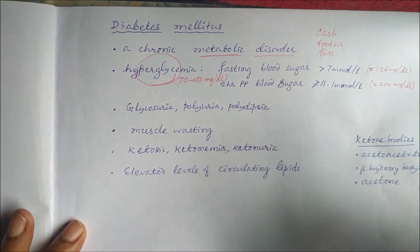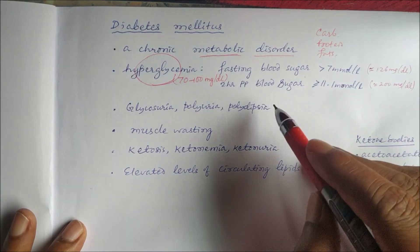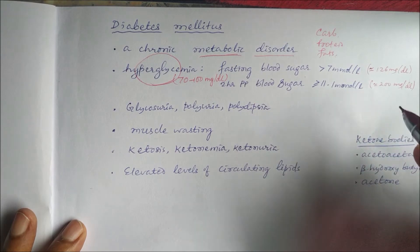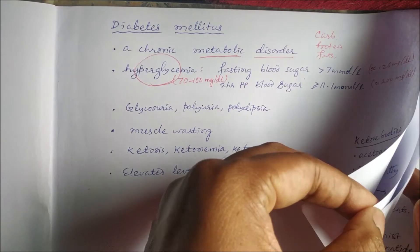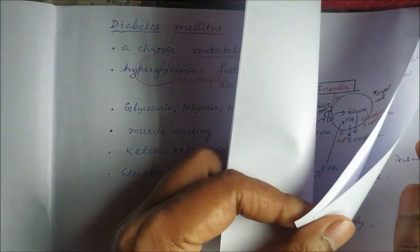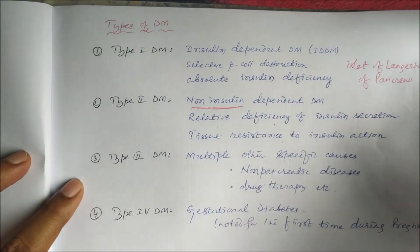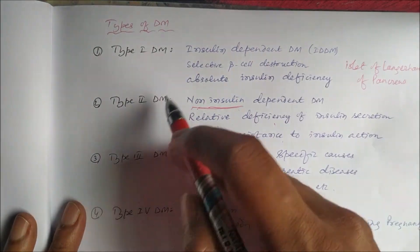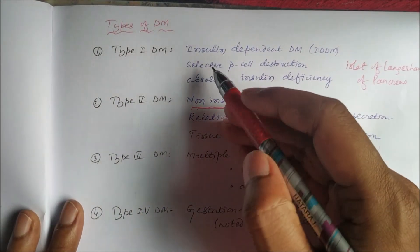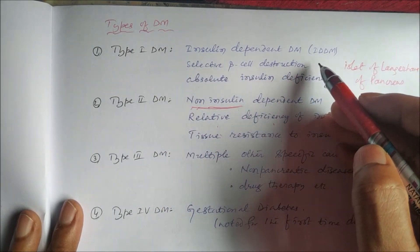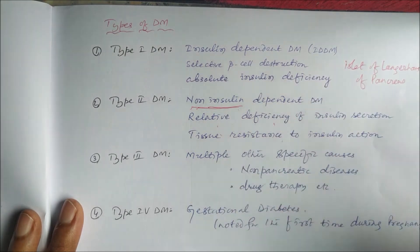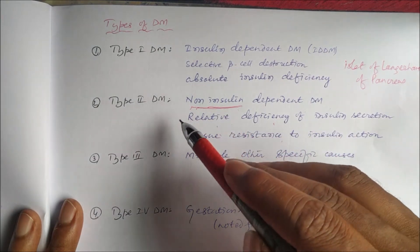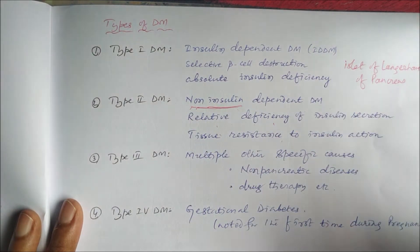The fasting blood sugar increases more than 7 mmol per litre and 2-hour postprandial blood sugar increases more than 11.1 mmol per litre. Diabetes is mainly of two types: Type 1 and Type 2, mainly based on the insulin hormone. Type 1 is insulin-dependent diabetes mellitus, where there is absolute deficiency of insulin because of selective beta cell destruction in the islet of Langerhans of the pancreas. Type 2 is non-insulin dependent diabetes mellitus, where there is relative deficiency of insulin secretion or insulin resistance.